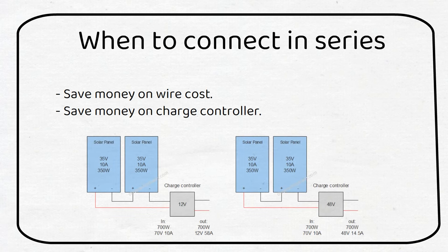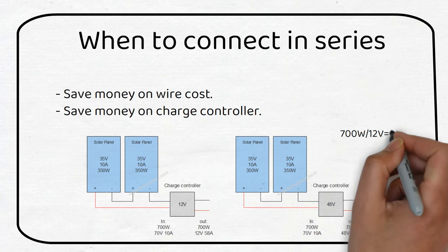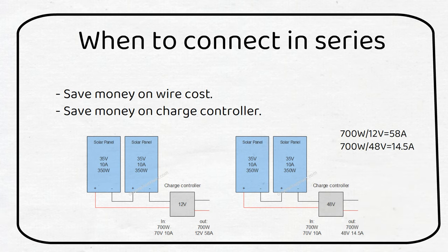Let's say you have an array of 700 watts and want to charge a 12 volt battery or a 48 volt battery. With a 12 volt battery you need a charge controller of 60 amps, while a 48 volt battery only needs a 15 amp charge controller.